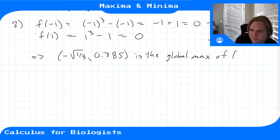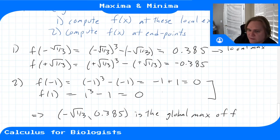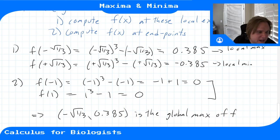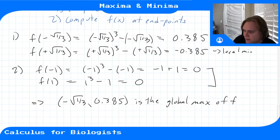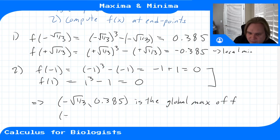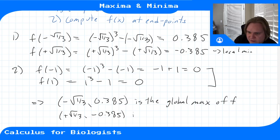And checking the local min: its value (-0.385) is smaller than the endpoint values (0), so the global minimum is at (+√(1/3), -0.385).